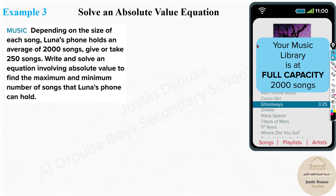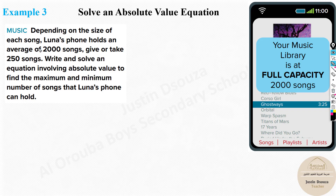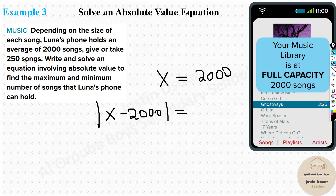Real-world problem: Luna's phone holds an average of 2000 songs, give or take 250 songs. Write and solve an equation involving absolute value to find the maximum and minimum number of songs. Since you don't know the exact number, that's X. The given average value is 2000, so bring it inside: X minus 2000. That absolute value equals the fluctuation, which is 250. The equation is: absolute value of X minus 2000 equals 250.